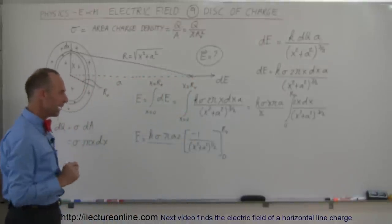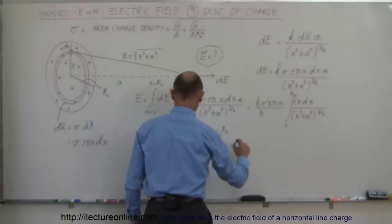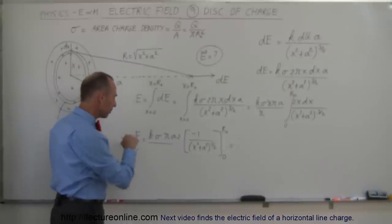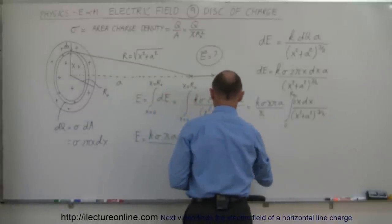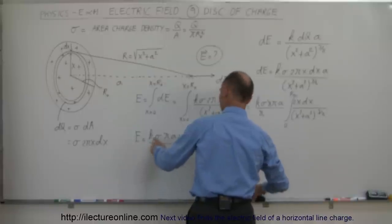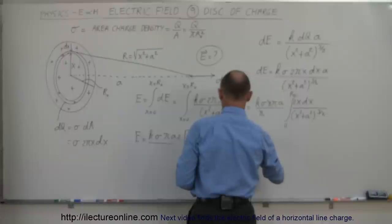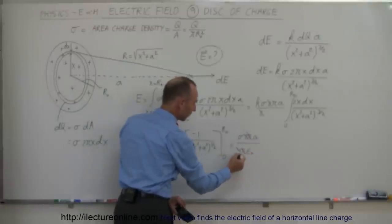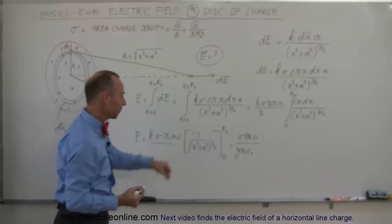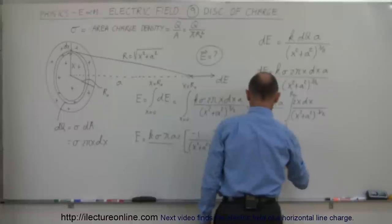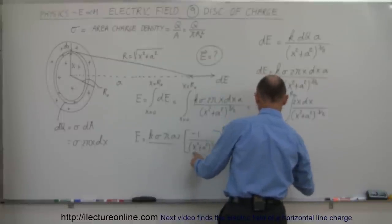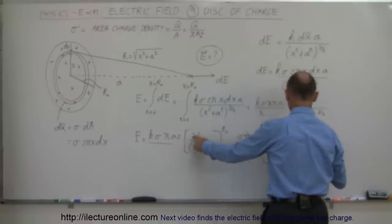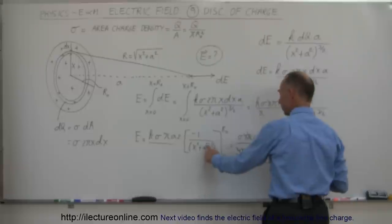Now we evaluate at the limits. To simplify, let's write K as 1 over 4πε₀. Then in the numerator we have sigma, 2π, and A — the pi's cancel and the 2 cancels with the 4, leaving 2ε₀ in the denominator. Evaluating, we get minus 1 over the square root of R-nought squared plus A squared, and then minus the lower limit which — because of the minus sign — becomes plus 1 over the square root of A squared, which is 1 over A.